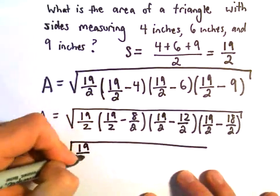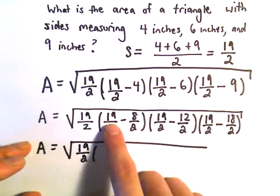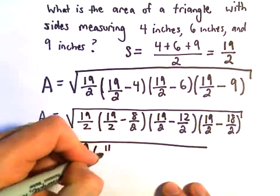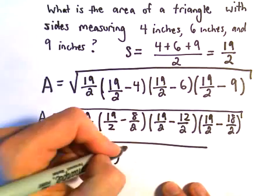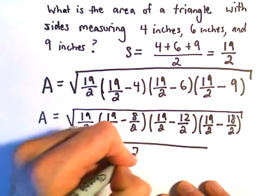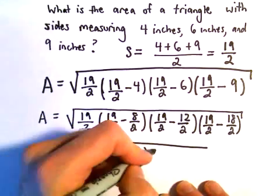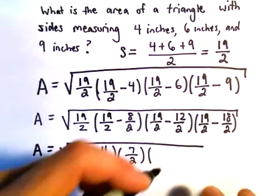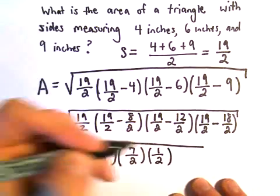So we've got 19 over 2. 19 minus 8, that would be 11 over 2. 19 minus 12, that would give us 7 over 2. And then 19 minus 18, that would give us 1 over 2.